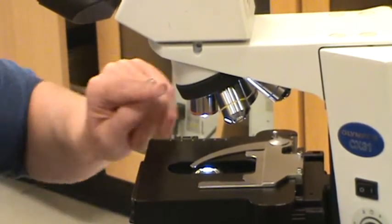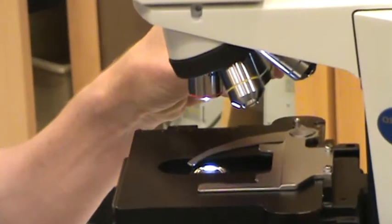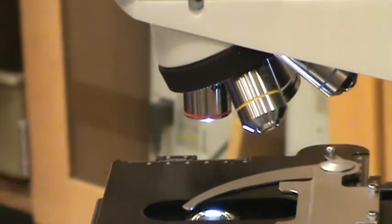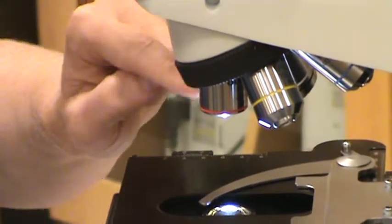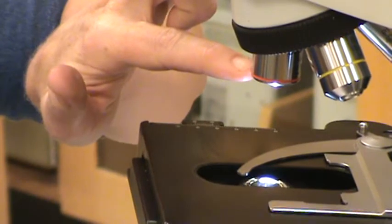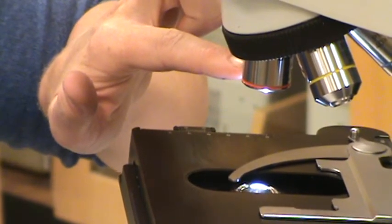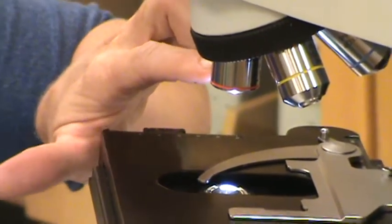You'll see that this microscope has four objective lenses. However, we're only using three of the four objectives in this course. The objectives are color coded. They have colored bands around them. The first one I'll show you has a red band around it. This objective is a 4x objective. It's also called the scanning power objective.